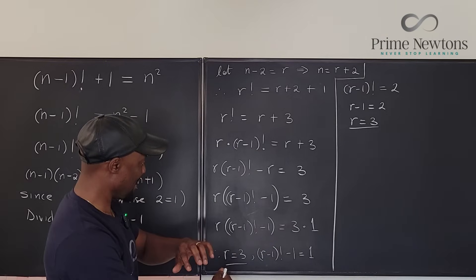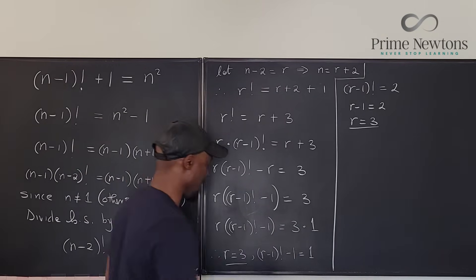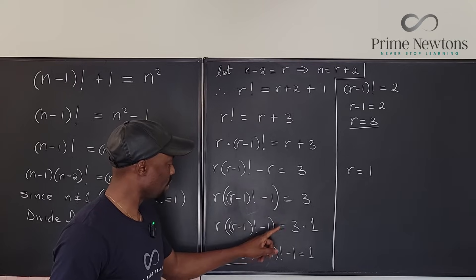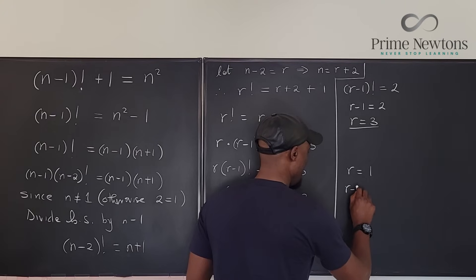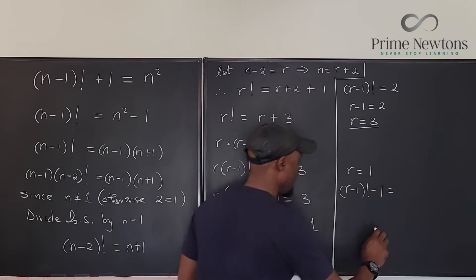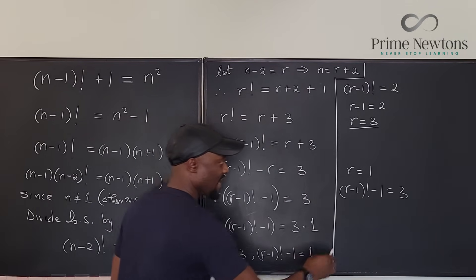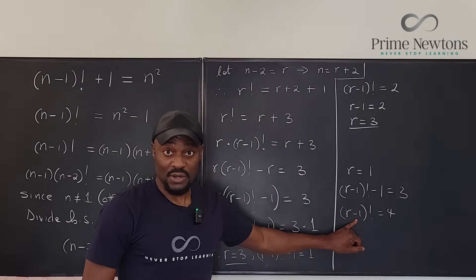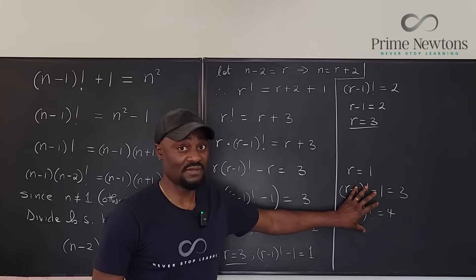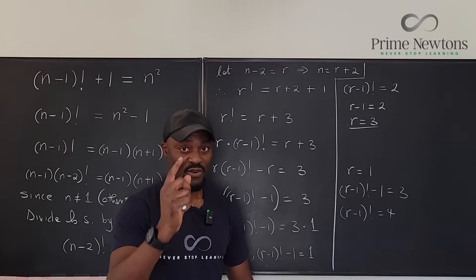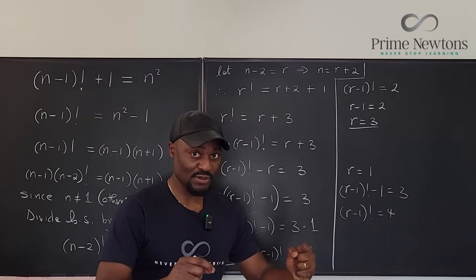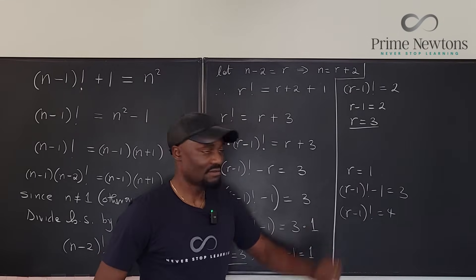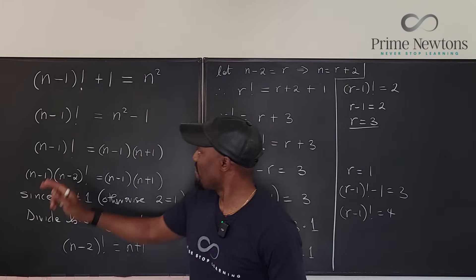Let's also check the other case: suppose r=1. Then (r-1) factorial minus 1 = 3, so (r-1) factorial = 4. But there is no integer whose factorial equals 4 — the factorial values go 1, 2, 6, 24 — so this case is invalid.